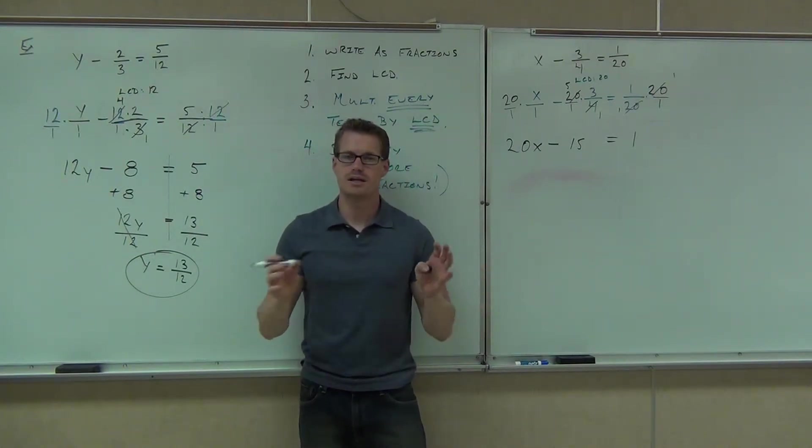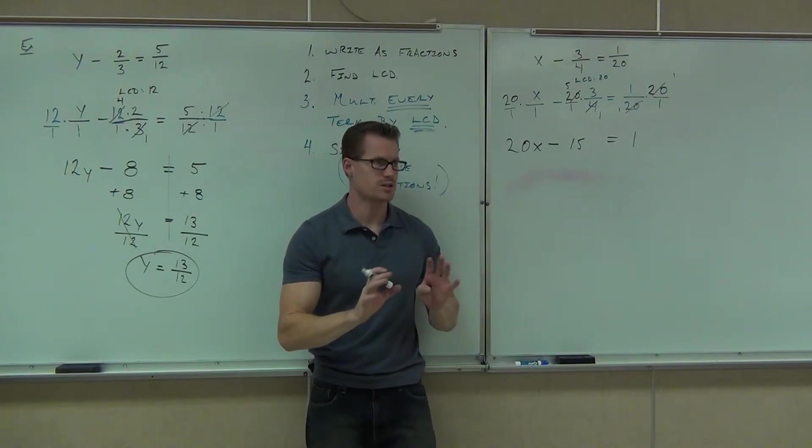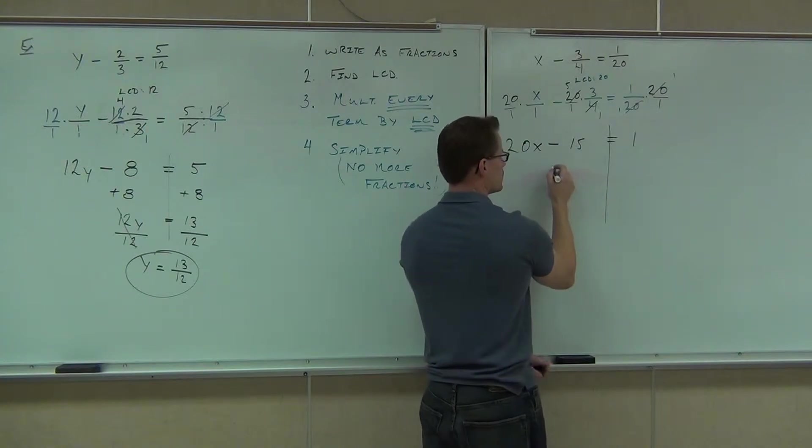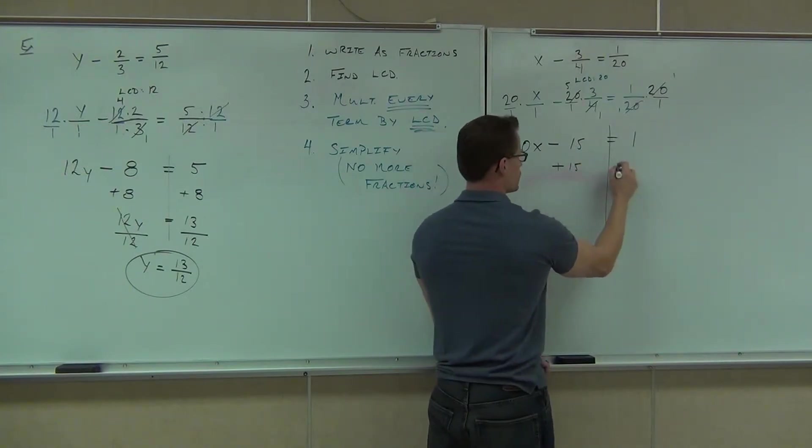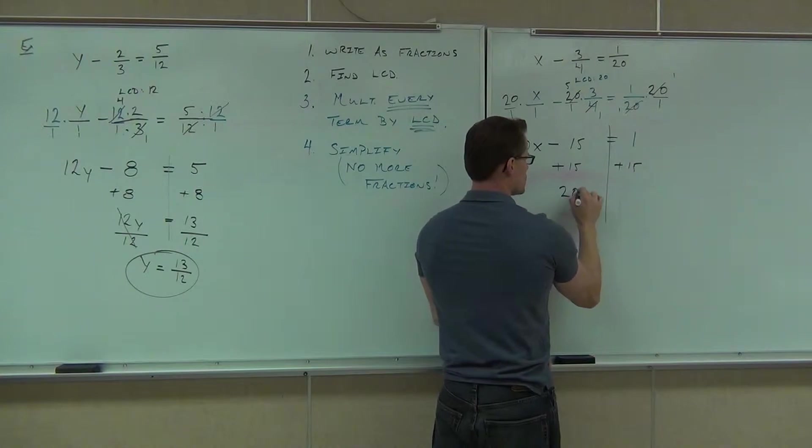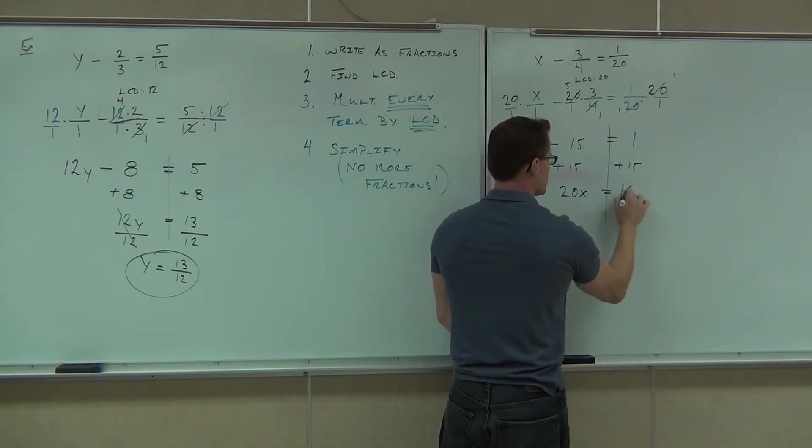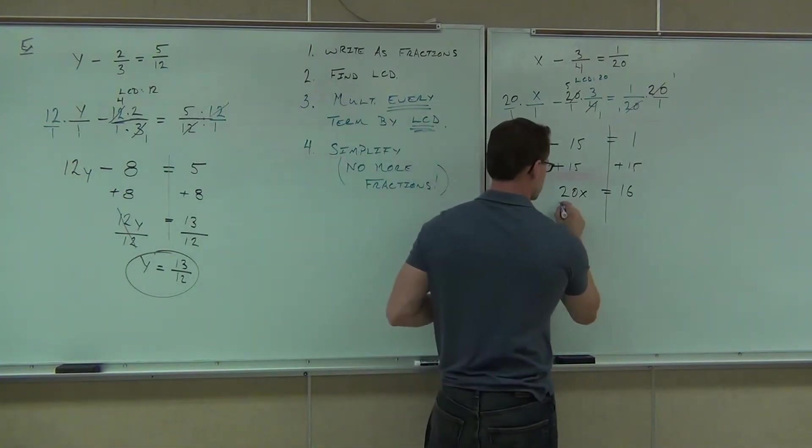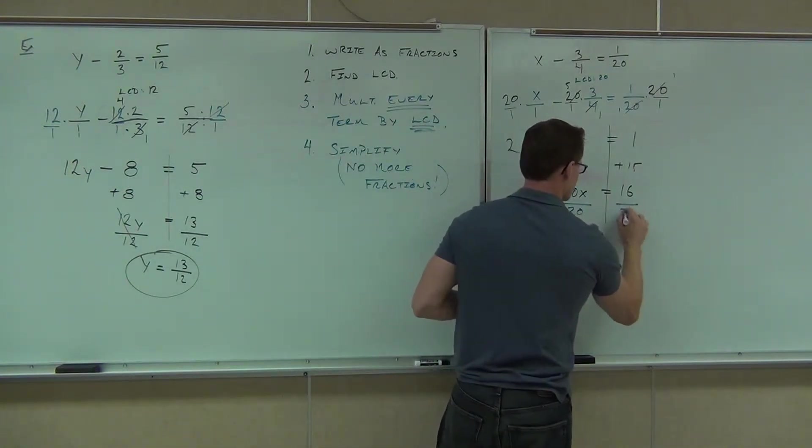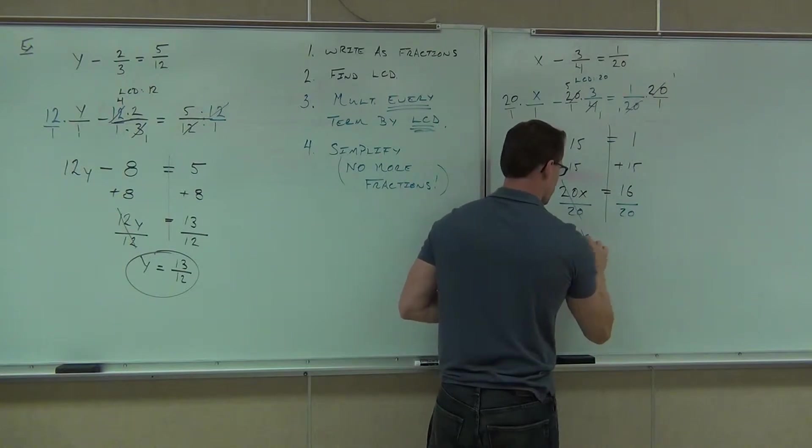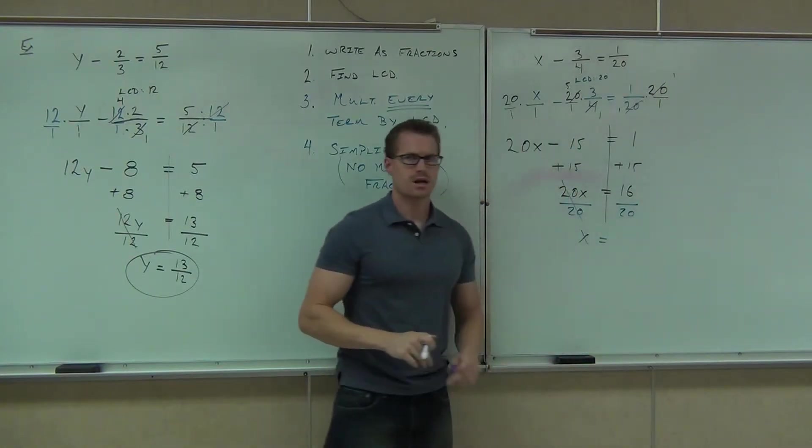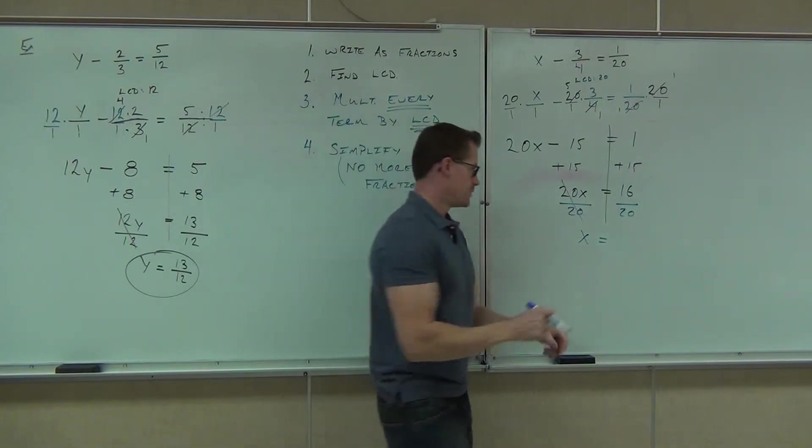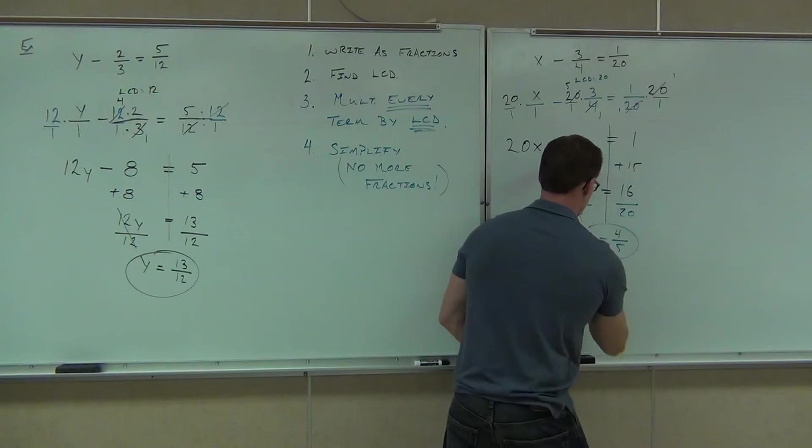Now we get to solve it. It's a lot easier to solve. We're not having to find any common denominators or do any work with fractions. We're going to add 15. Perfect. We get 20x equals 16, divide by 20. What do you think? Yeah, that's 16. Yeah, you've got to reduce it. What goes into both numbers? Four. Four goes into 16 four times and 20 five times. That's your answer.